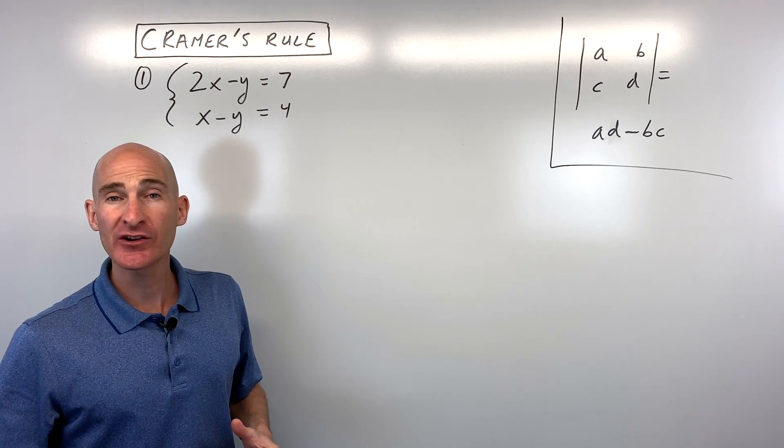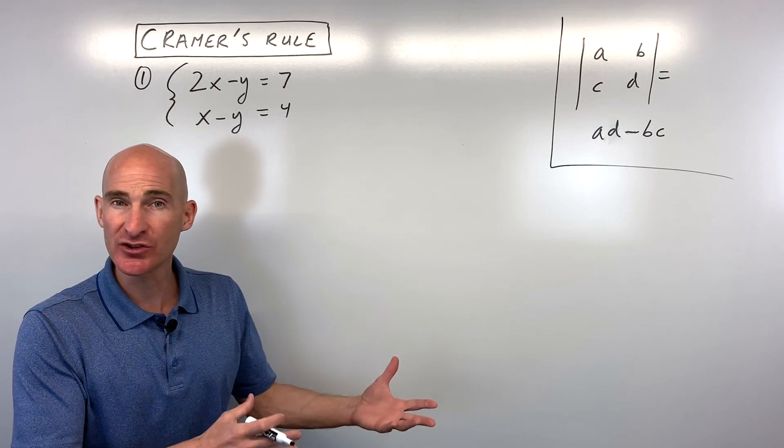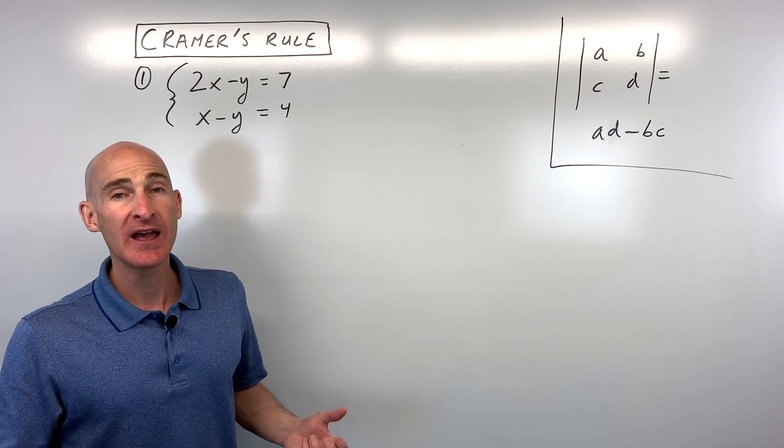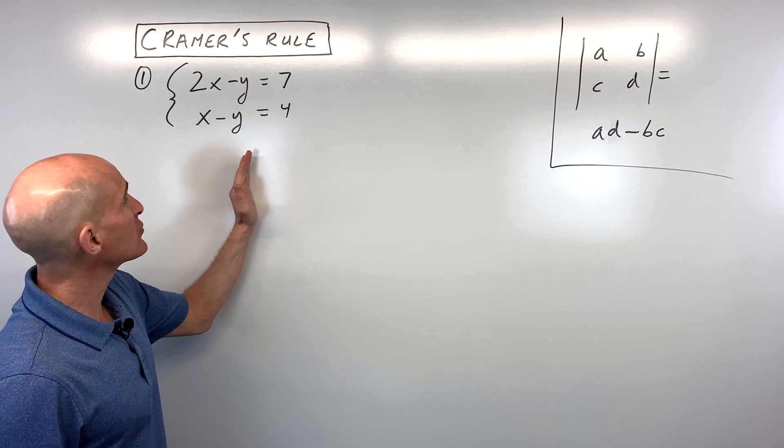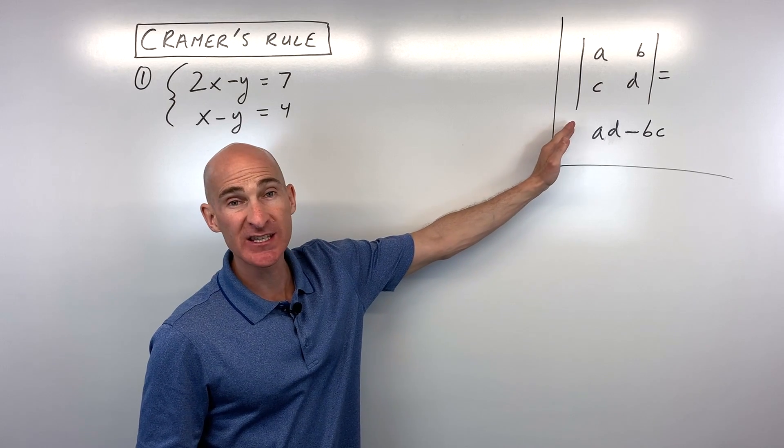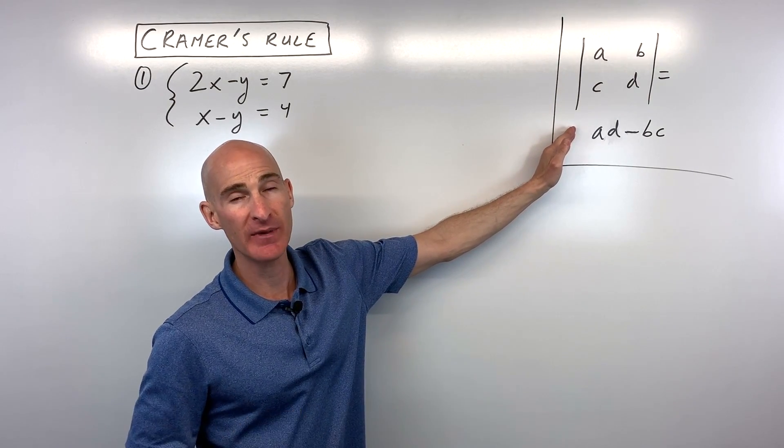You probably already learned how to solve systems of equations using the substitution method, the elimination method, the graphing method, and other methods. But in Cramer's rule, we're using matrices and specifically the determinant of a matrix.